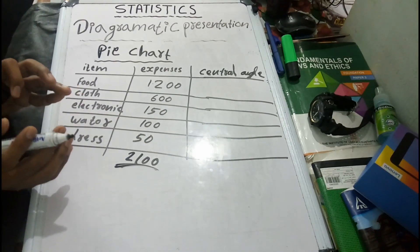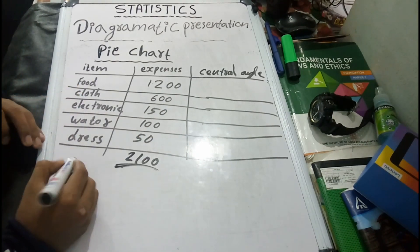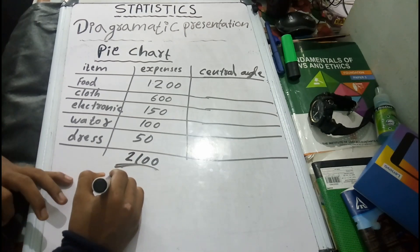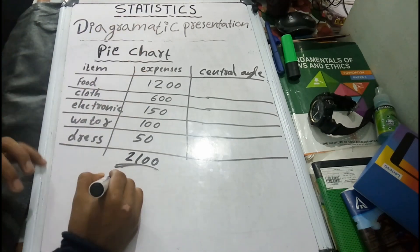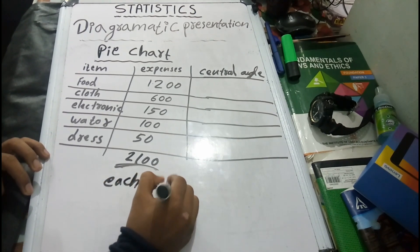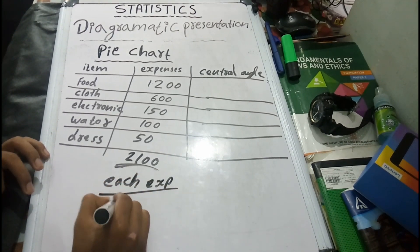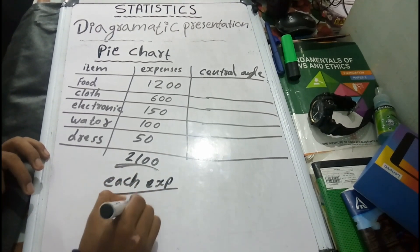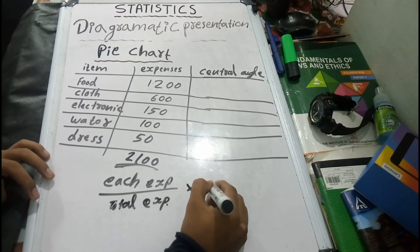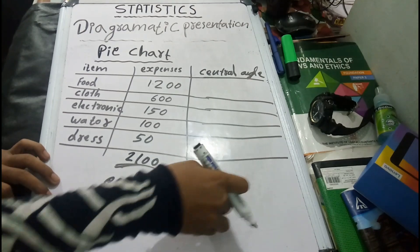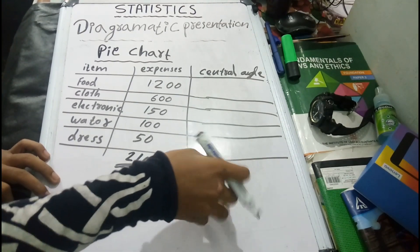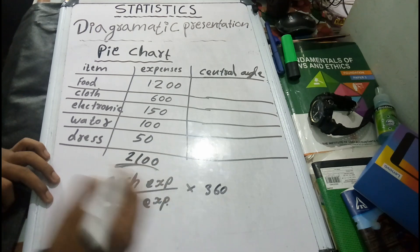What is the center? We are going to use the formula: each expense divided by total expense, into 360.